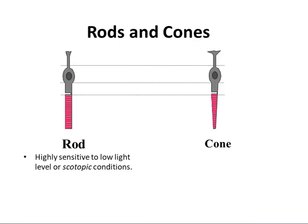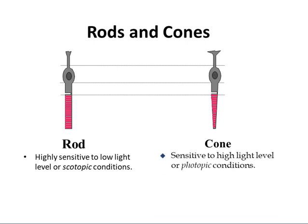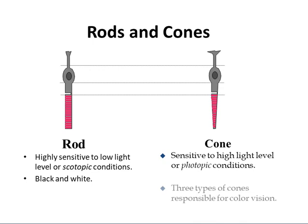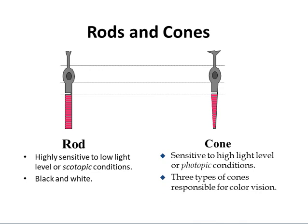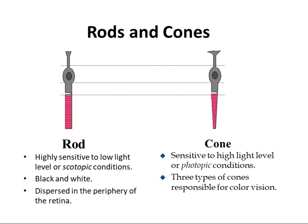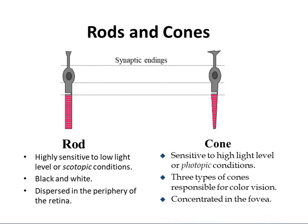Rods are highly sensitive to low light conditions, also known as scotopic conditions. Rods detect black and white, whereas cones provide three types of color vision. Rods are dispersed in the periphery of the retina, whereas cones are concentrated in the fovea. The cells of both rods and cones include synaptic endings, cell nucleus, inner segments, and outer segments.